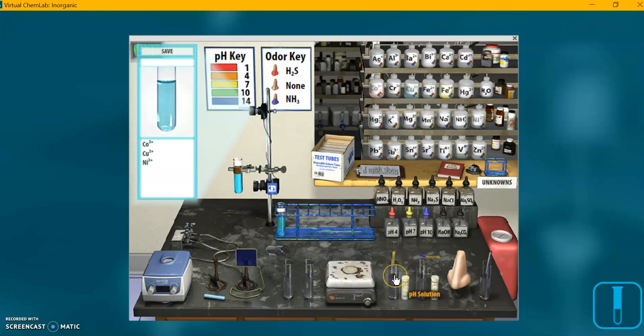This does the pH of the solution. So you can see the pH paper appears above the test tube. This does the pH vapor of the solution. This is for sniffing. There's a folder key over here. pH key over here. This is for stirring.